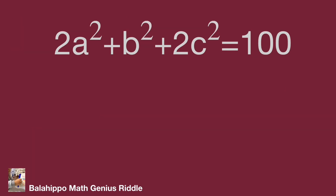We have the given information: 2a squared plus b squared plus 2c squared equal to 100. There are three unknowns a, b, c, and the squared value in each one. Although the other information shows a, b, c are positive integers, it's still hard to get the value directly from this input, so we are going to find more information.